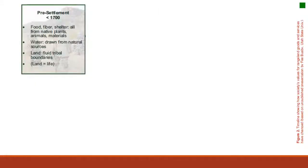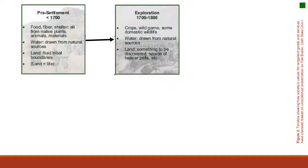Society's values of rangeland goods and services change over time. Based on some unpublished data from Phoebus out of Utah State University, pre-settlement in the early 1700s a lot of our food and fiber came from native plants and animals, with no land boundaries. In the 1700s and 1800s, more exploration brought domesticated wildlife onto rangelands and the discovery of new goods and services — for example, beaver pelts became a hot commodity.